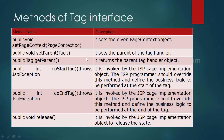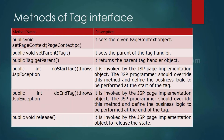The methods of the Tag interface include: setPageContext, which sets the given page context object; setParent, which sets the parent of the tag handler; doStartTag, which is invoked by the JSP page implementation object — the programmer is responsible for overriding this method and writing the business logic to be performed at the start of the tag; and doEndTag, which is similarly invoked at the end of the tag.